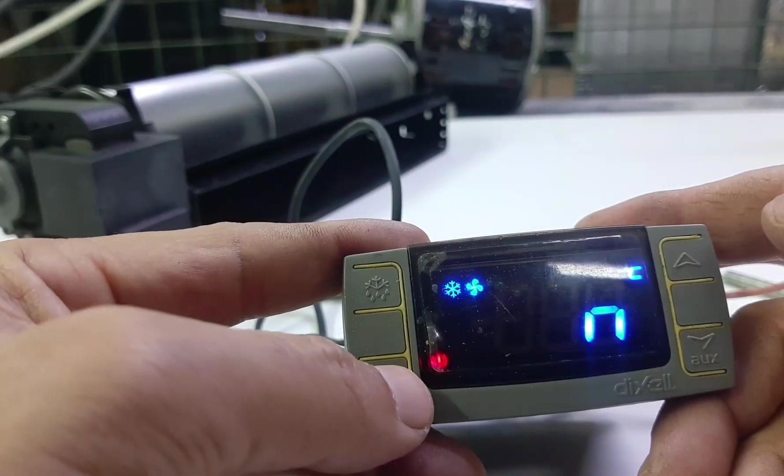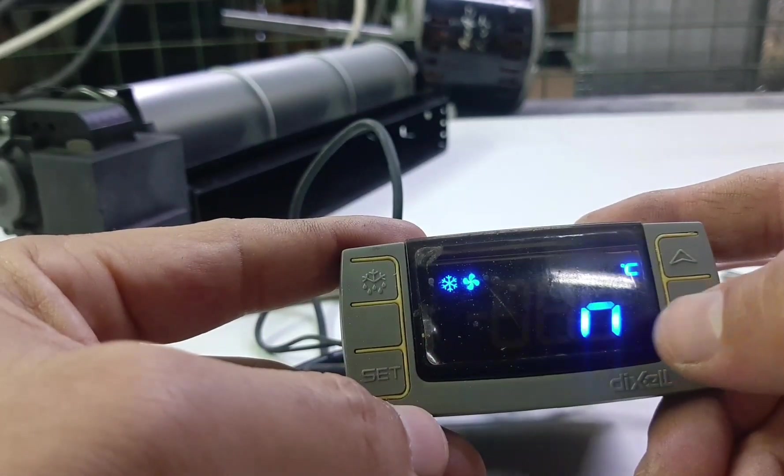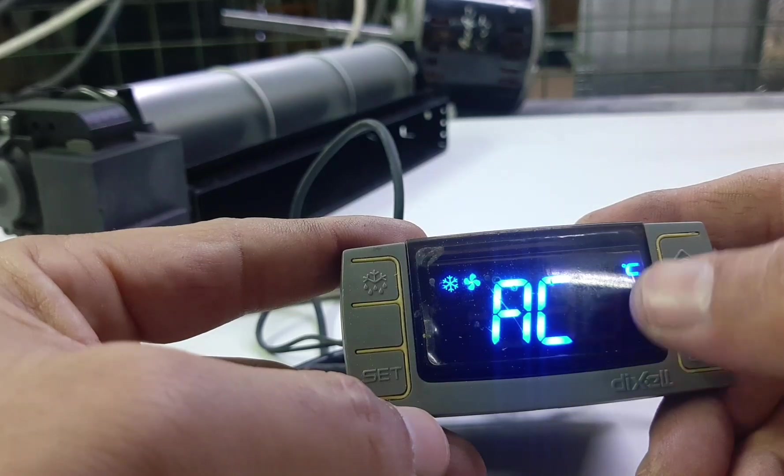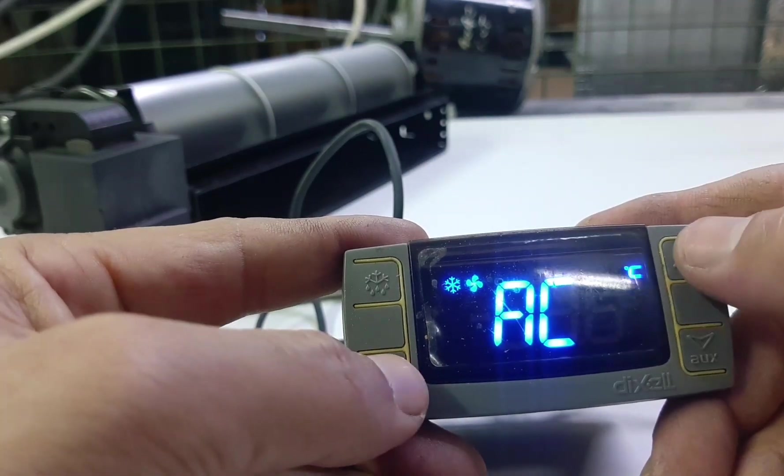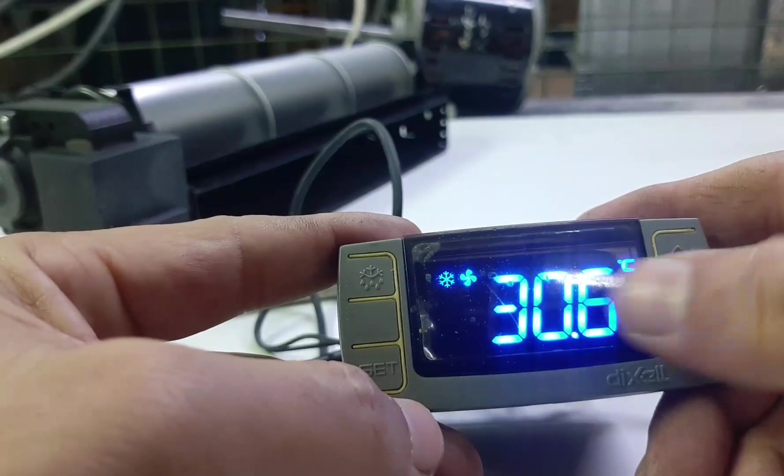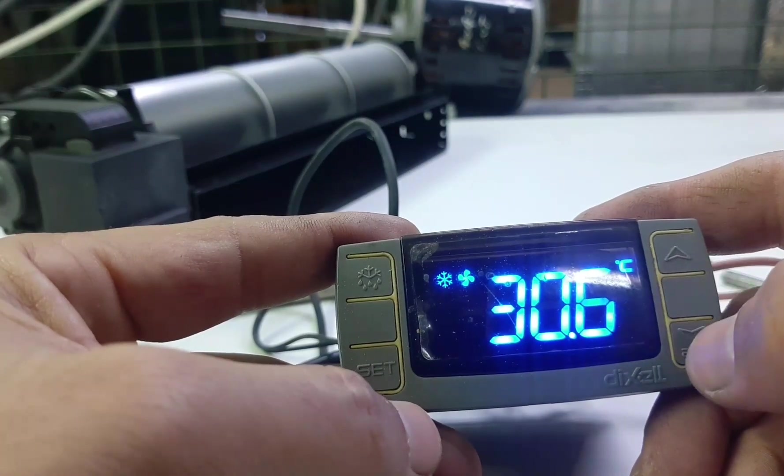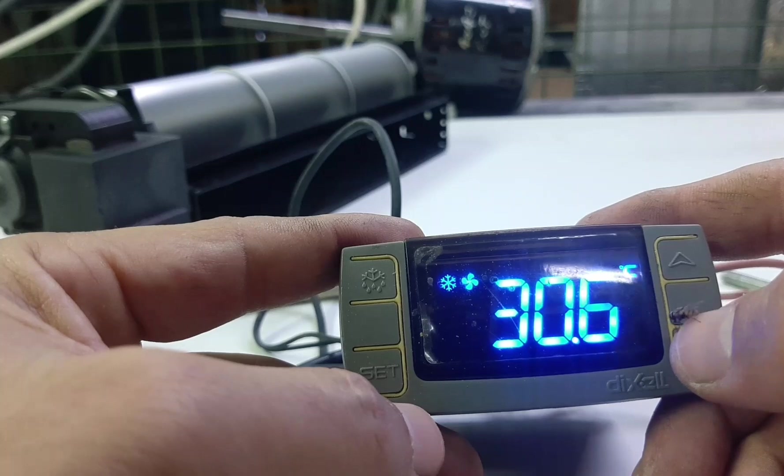You will see P2 error will not show in the display. Up key and set key, go back. Okay, you can see there is no error now. So P2 error, P2 probe.